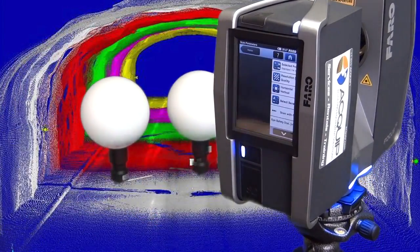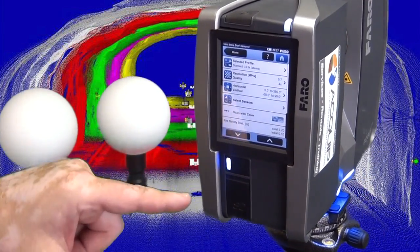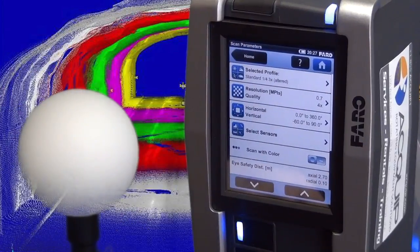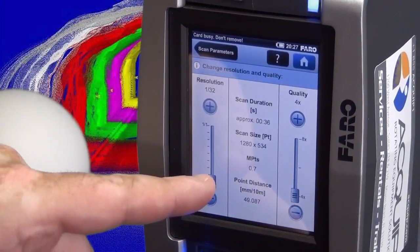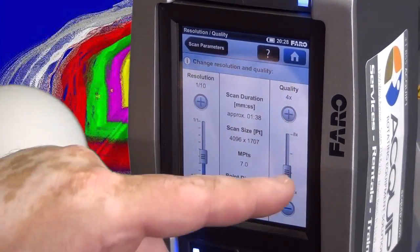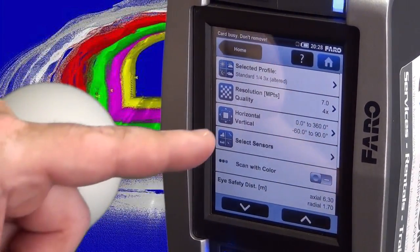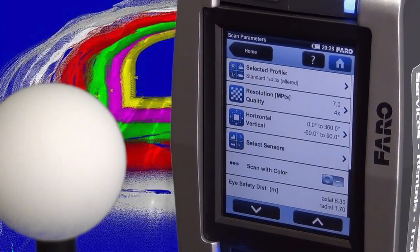In the parameters, what we can do is change the different scanning profiles. We can change the resolution and quality of our scans. We can change whether to scan vertically or horizontally.